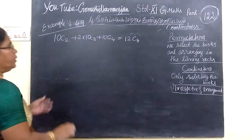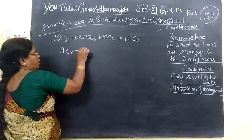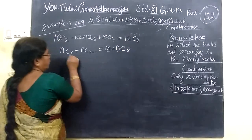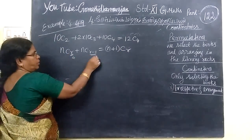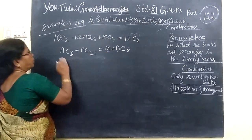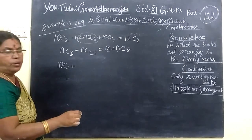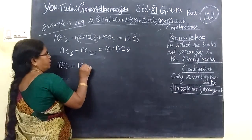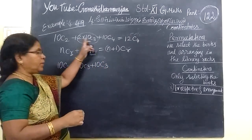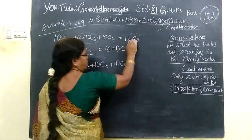Now we will see the next example. Here for this we use the formula NCR plus NC(R-1) equals (N+1)CR. So you see this 10C2 appears here. Here is 2 times 10C3, so you can write the same. 10C3 then plus 10C3.